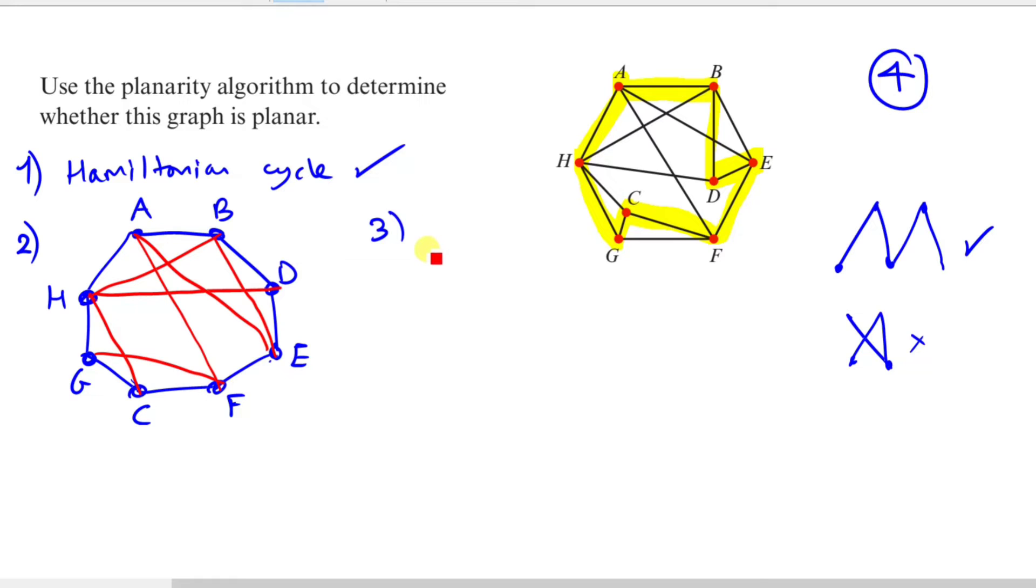Next, we're going to label all our edges inside the eight point octagon. So we've got AF and AE. We also have BH, BE, GF, DH, GE, and lastly we have CH.